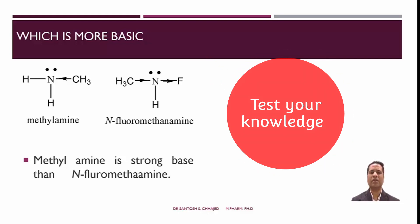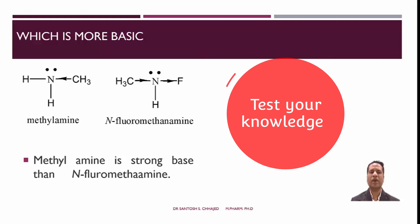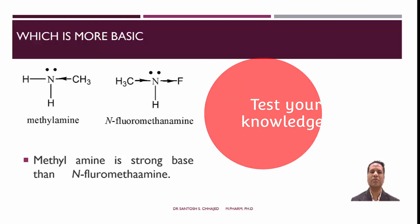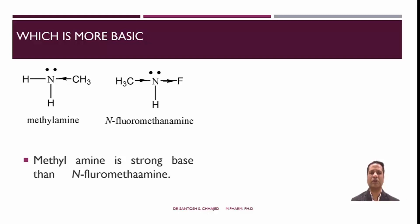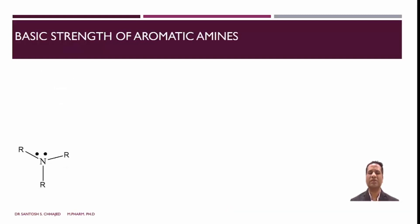We will now compare the basic strength of methylamine and N-fluoromethanamide. In methylamine, the methyl group releases electrons onto the nitrogen, stabilizing it in the reaction. In N-fluoromethanamide, fluorine being an electronegative element withdraws electrons from the nitrogen, intensifying the positive charge on it. This makes the nitrogen further unstable, so it shares electrons more slowly with an electrophile. As a result, methylamine is more basic than N-fluoromethanamide.